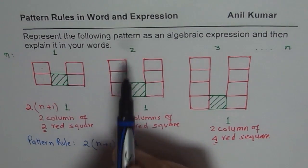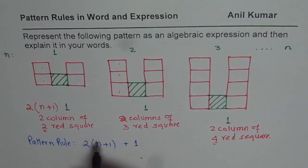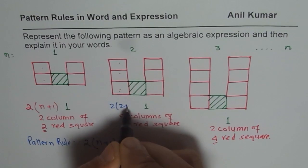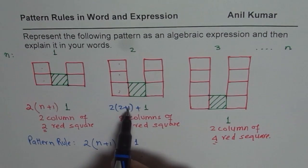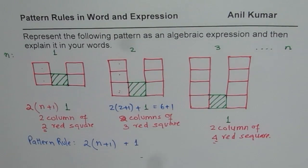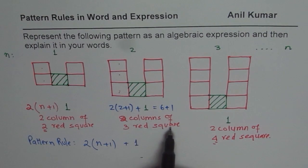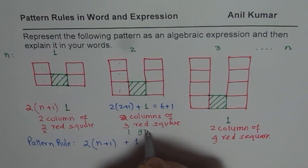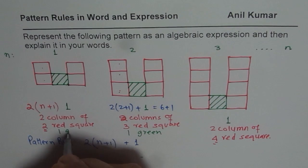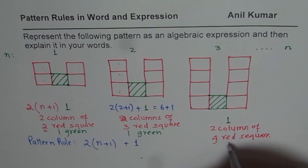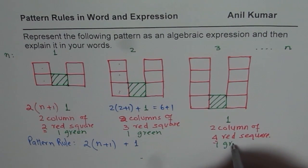Let us now look at number two. So if I put n as two, what do I get? I get two times two plus one, plus one. That gives me two plus one is three, and two columns — six. That gives me six plus one, and that is true. So I have two columns of three red squares and one green. In pattern one: one green and two columns of two red squares. Here also we have two columns of four red squares, but one green.